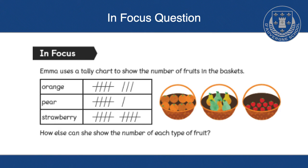Looking at the orange section, there are five oranges and then three extra tally marks. That means five add three, which gives us eight oranges in the basket.